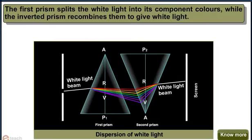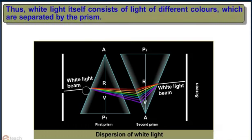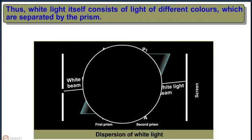The first prism splits the white light into its component colours while the inverted prism recombines them to give white light. Thus, white light itself consists of light of different colours which are separated by the prism.